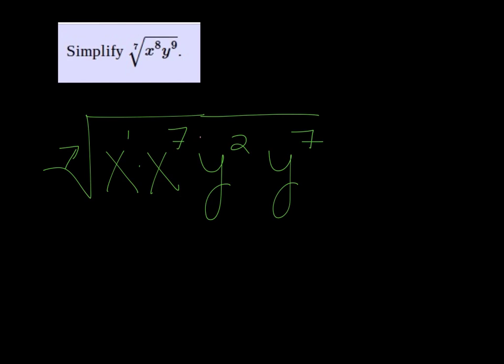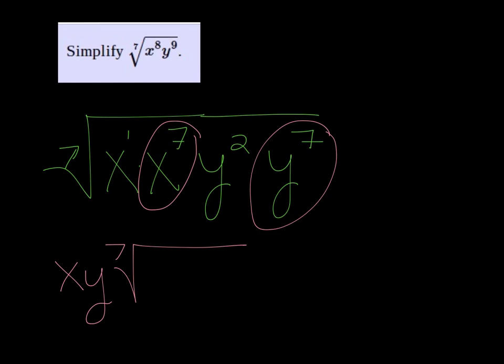So these two powers of 7 in here, x to the 7th, y to the 7th, if you take the 7th root of that, you just want to take the base. So what comes out is the x and the y, and what's left in the radical is x, y squared.